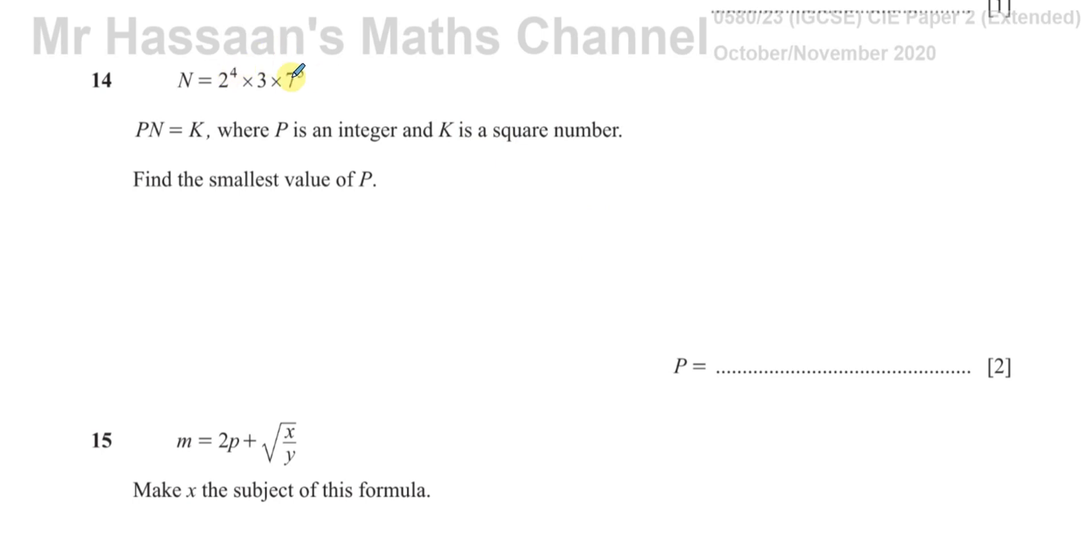So, for example, this is not a square number because the powers that they're raised to are not all even. The 2 to the power of 4 is fine, but the 3 is raised to an odd power, and the 7 is raised to an odd power.